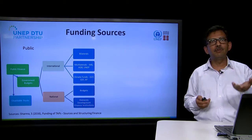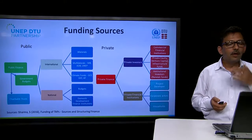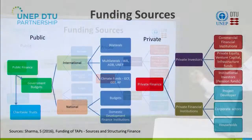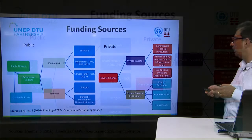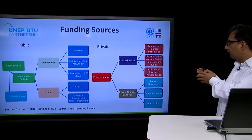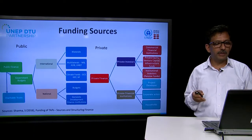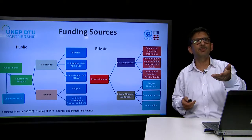At the national level, funding could come from government budgets or domestic financial institutions. As for private sector funding, it can be divided into funding from private investors and funding from private financial institutions. Private investors include commercial financial institutions, private equity, venture capitals, infrastructure funds, and institutional investors. Private financial institutions involve project developers, corporate actors, and households — for example, when talking of solar home systems, funding can be provided by the households themselves.